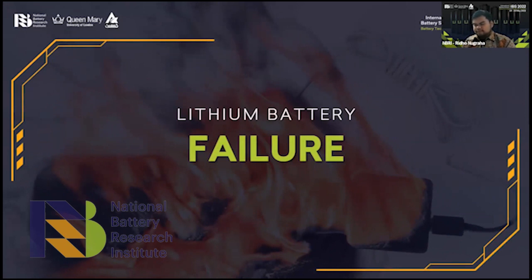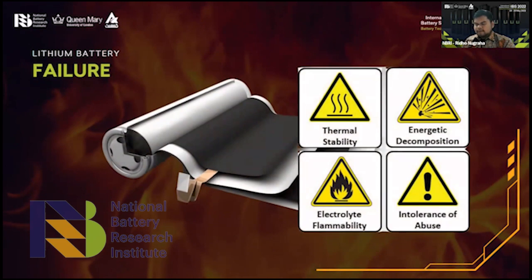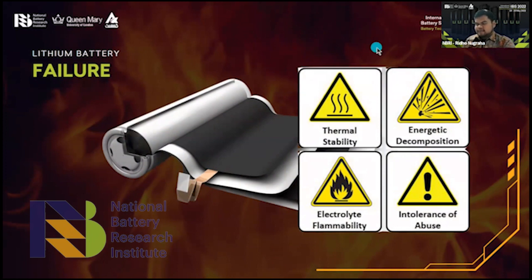Now we will talk about how lithium batteries fail. The common hazards — there are four possibilities. The first one is thermal stability, the second is energetic decomposition, the third is electrolyte flammability, and the fourth is intolerance of abuse. Thermal stability means the battery is sensitive to higher temperatures, which can lower performance and be dangerous to the user. Energetic decomposition means the battery has a stainless steel housing that can explode at any time, which is also harmful to the user. The third, electrolyte flammability — the electrolyte commonly used is LiPF6, which is flammable when it comes into contact with oxygen in the air. And intolerance of abuse means the battery is sensitive to puncture — if you have a battery product, don't ever crash or puncture your battery with sharp objects, as it can be very dangerous.